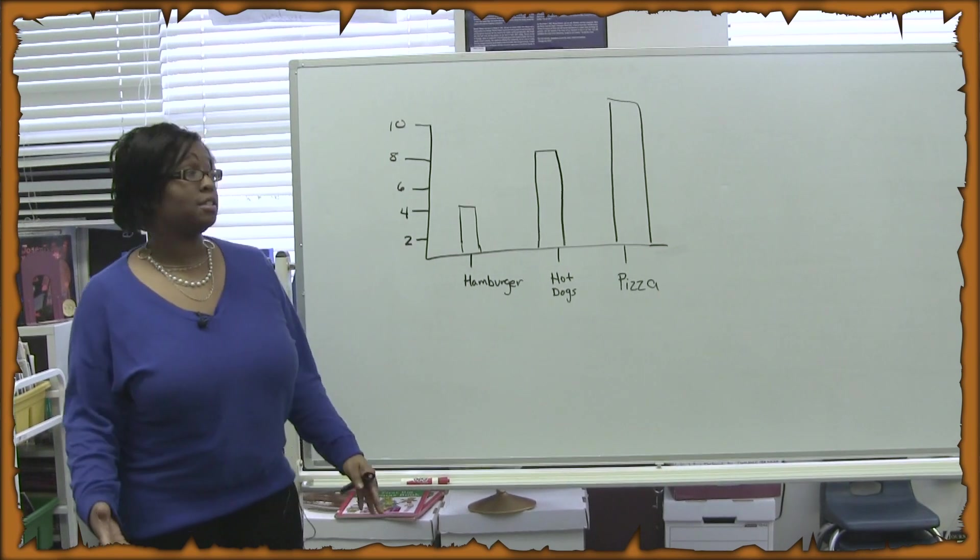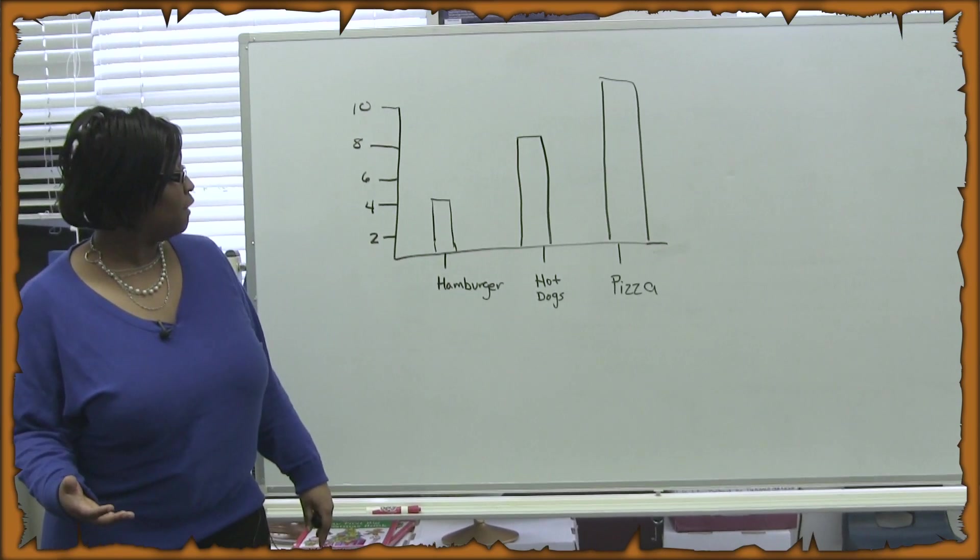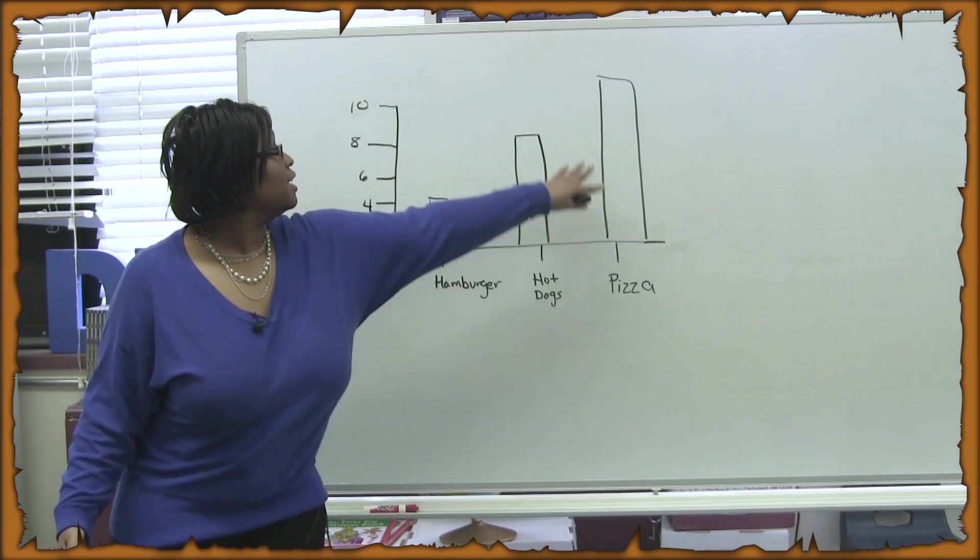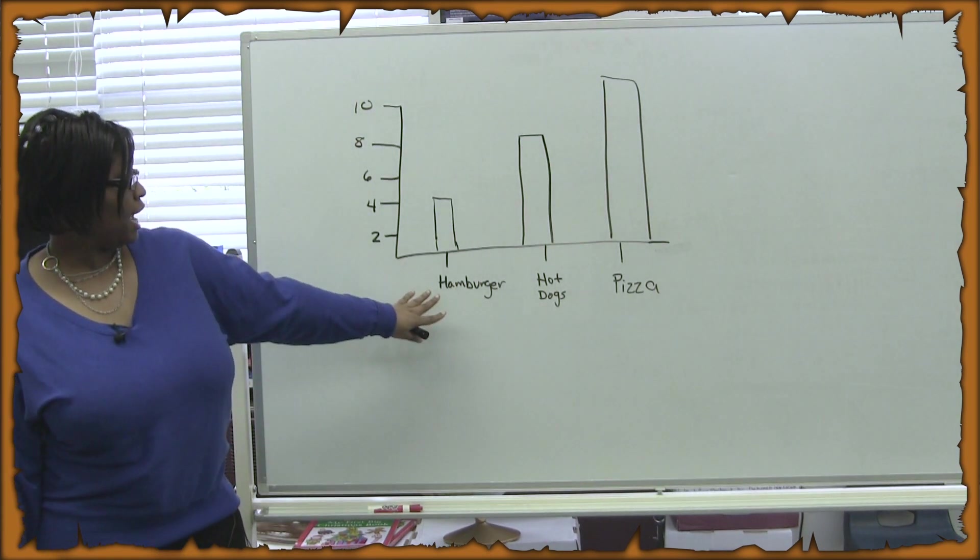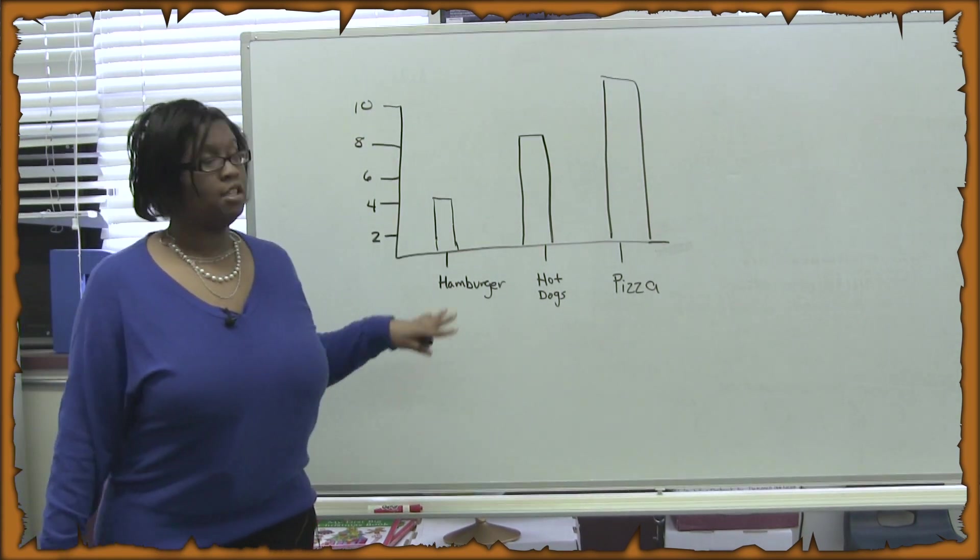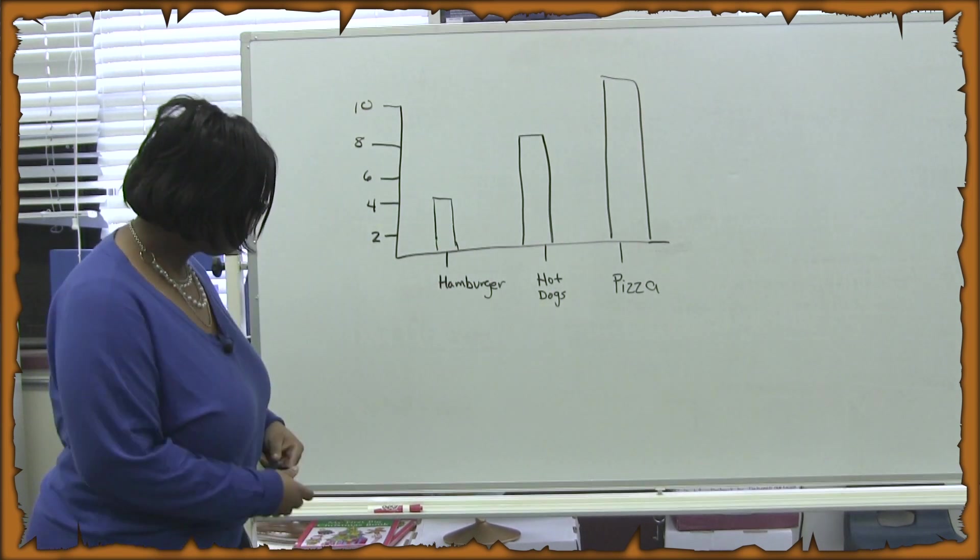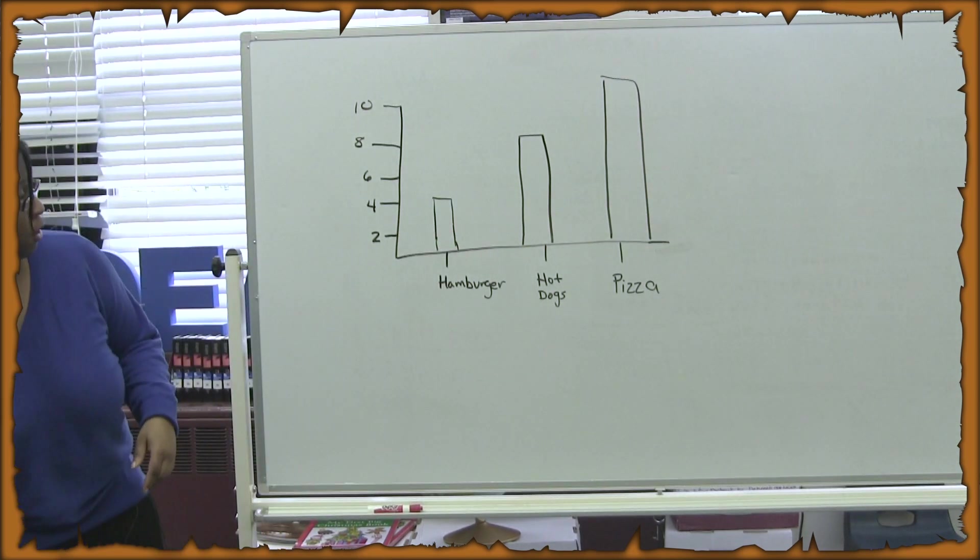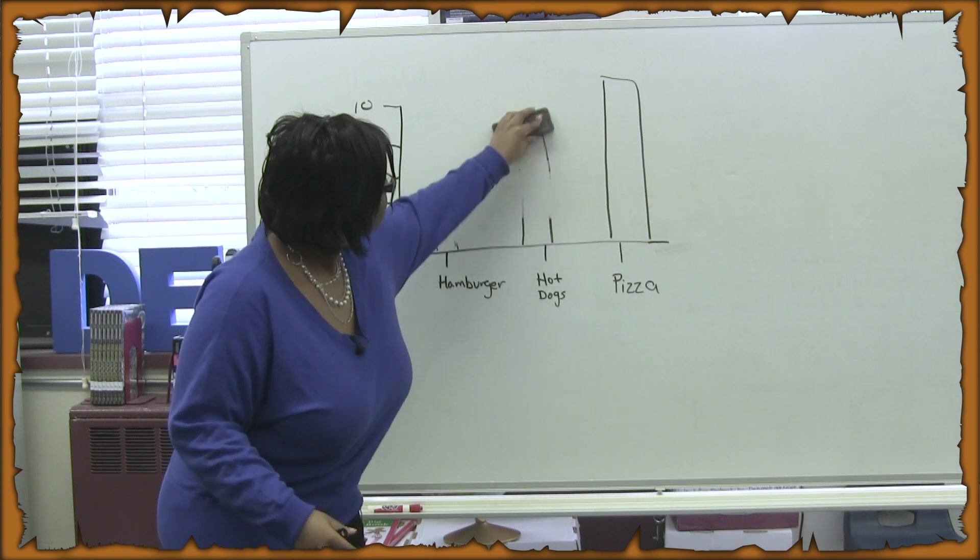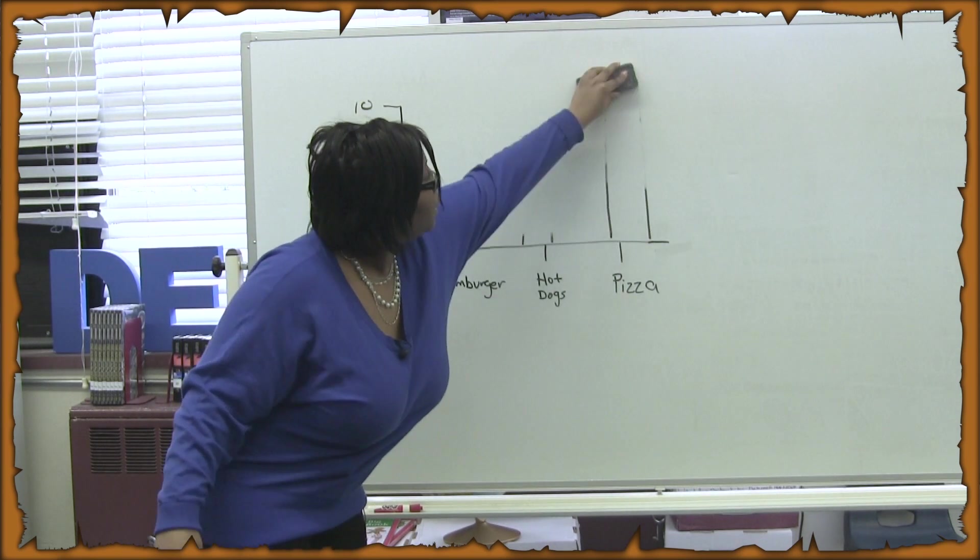So, our greatest amount of likes of pizza is ten. And our least amount would be hamburgers at four. These are just predictions. Now, we'll actually go on to get the actual number of what we like.